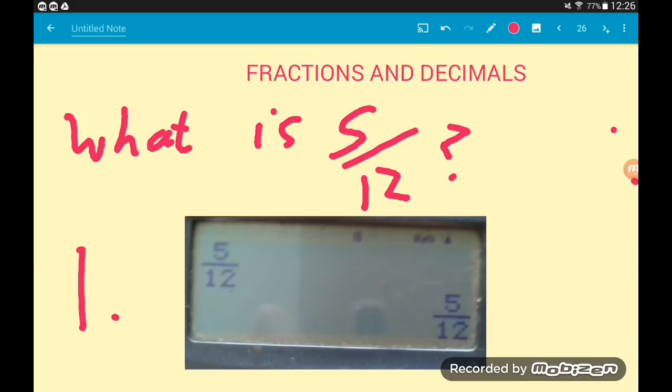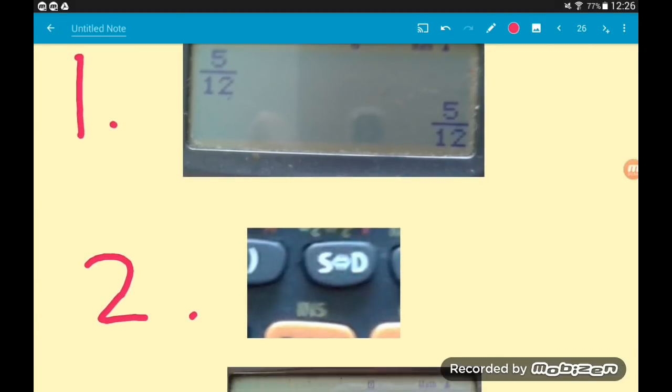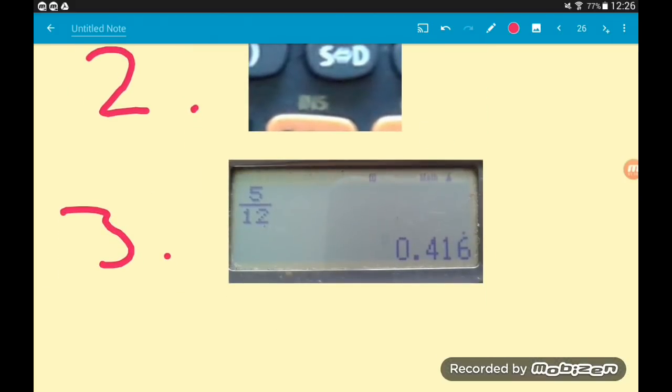To turn that then into a decimal, we go to step 2: find the magic SD button. For anyone wondering, this stands for standard to decimal. If you press that it will then turn your fraction into a decimal.